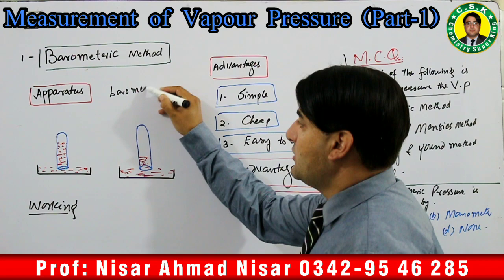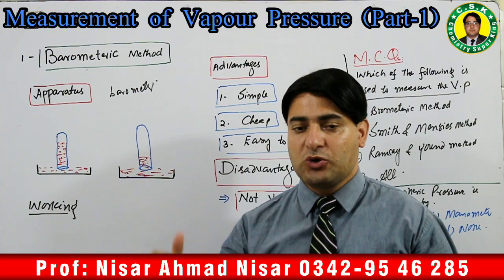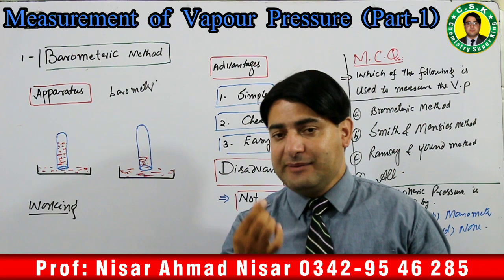Barometric method mein jo apparatus use hota hai us ko barometer kehte hain. Barometer ek simple sa apparatus hota hai jis mein ek dish hoti hai — us dish ko mercury se fill karte hain.